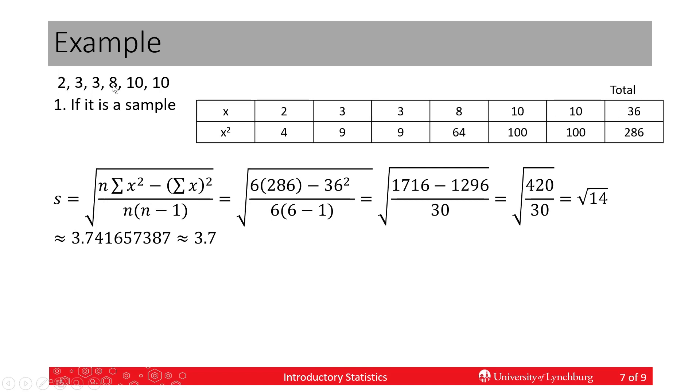N is how many we have, which is six. The sum of x squared is this bottom number here, 286. And then we plug in the sum of x, which is 36, and square it. Take your calculator and square 36, you get 1296.